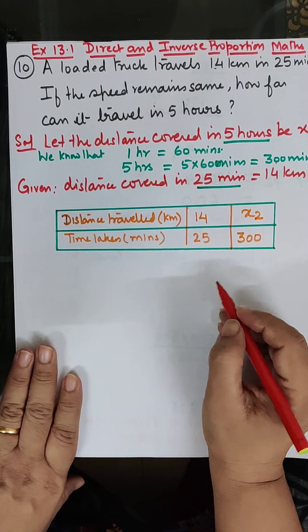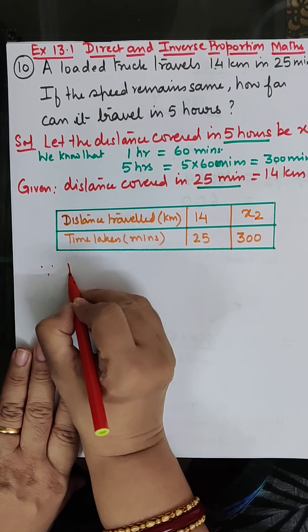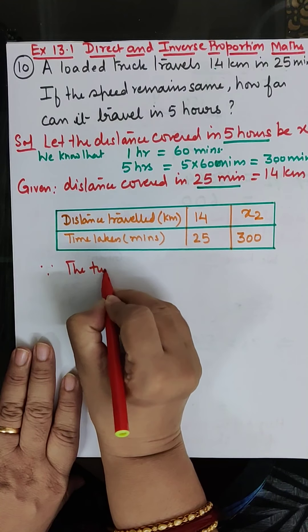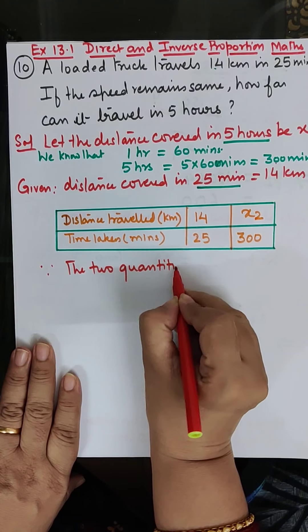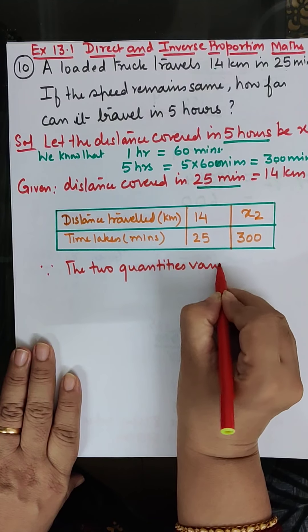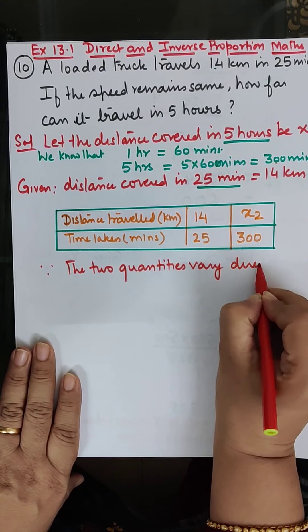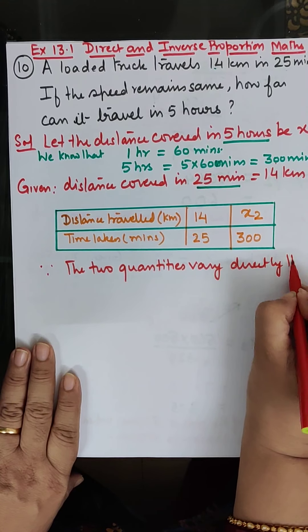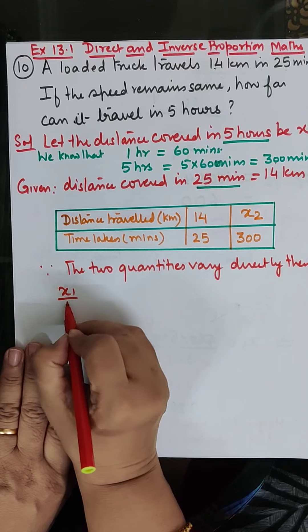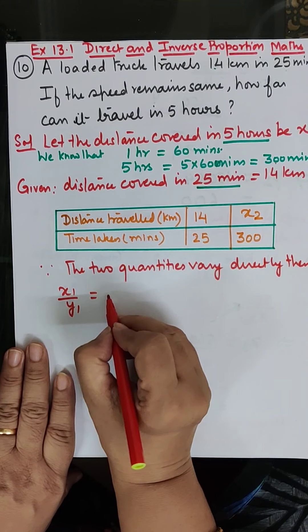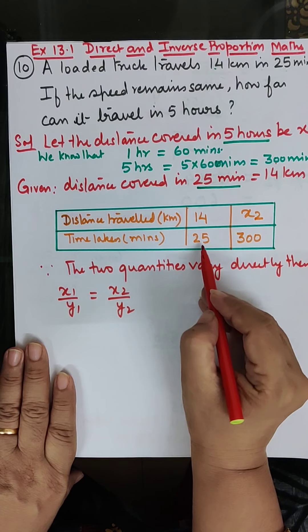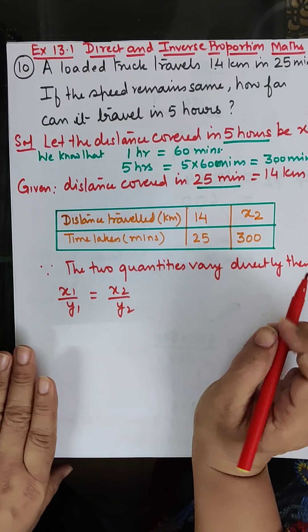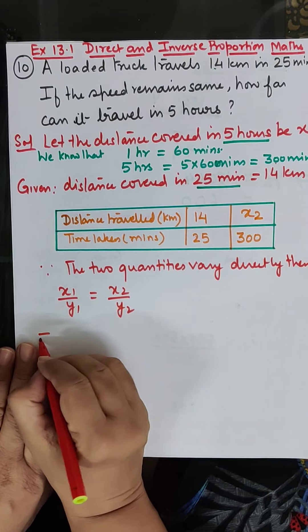Now let's start. Since the two quantities vary directly, then x1 upon y1 is equal to x2 upon y2. This is x1, this is y1, this is x2, this is y2. So this implies that: